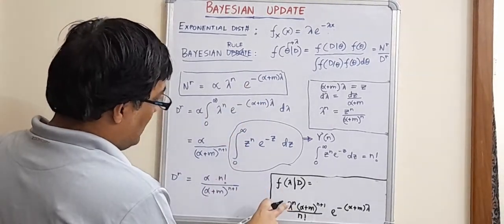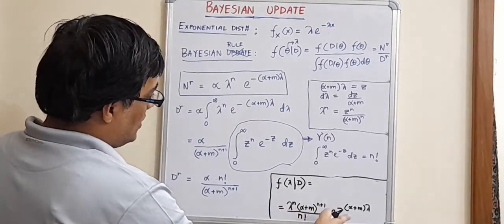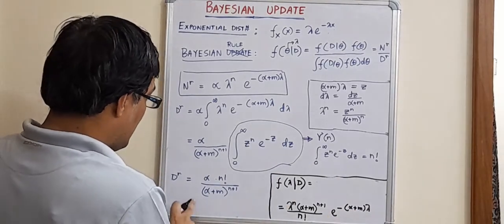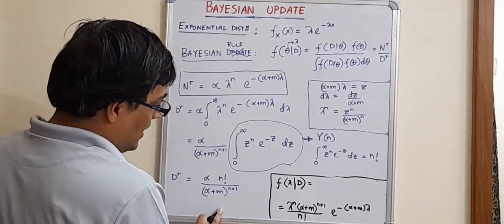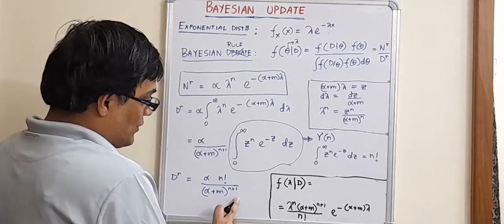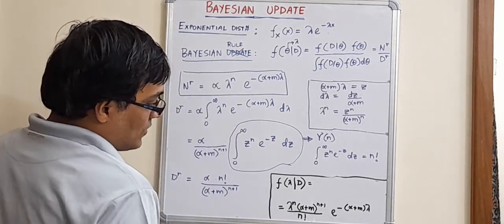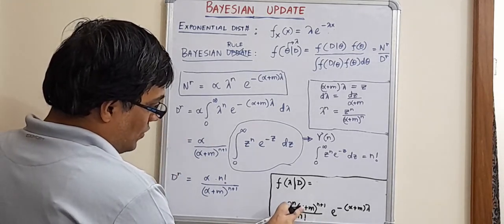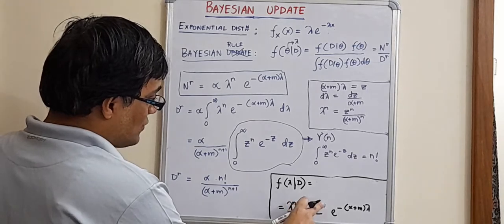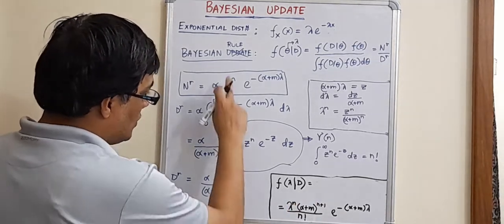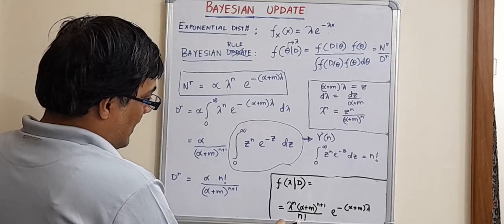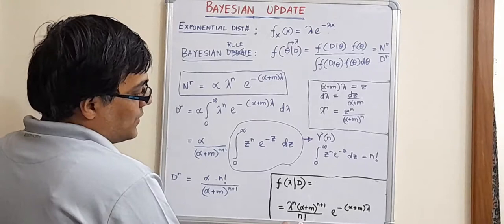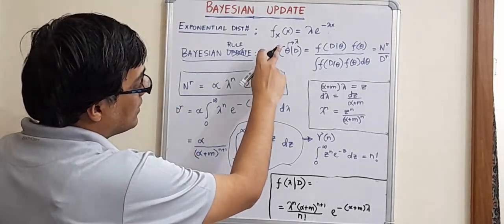Which is perfectly fine. Because lambda to the power n into e to the power n into lambda. It stays in the numerator and the denominator has alpha into factorial n into alpha plus m to the power n plus 1. So, this alpha and this alpha cancels out. So, alpha goes out of the picture and what remains is lambda to the power n into alpha plus m to the power n plus 1 because this guy now goes to the top and the factorial n it stays in the bottom, right? So, this is the expression for the posterior density function of lambda.